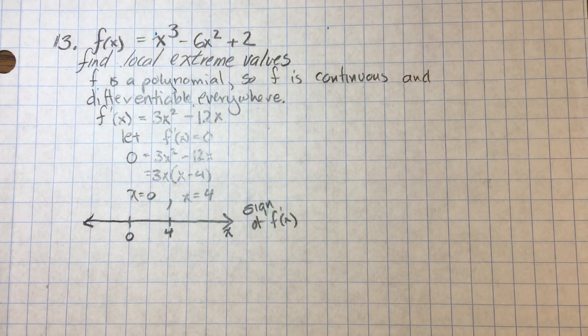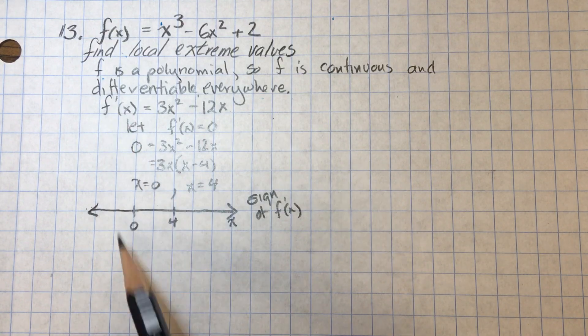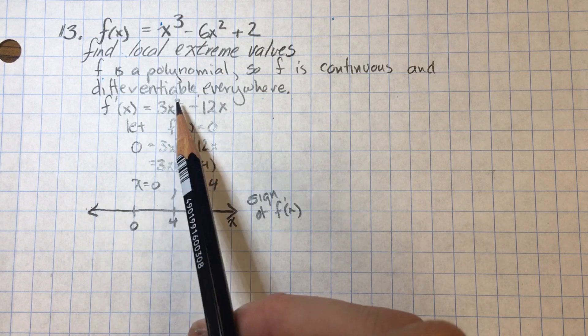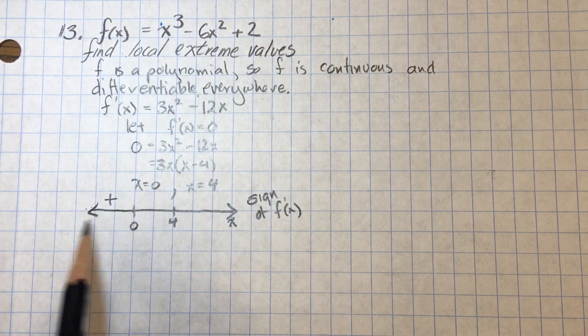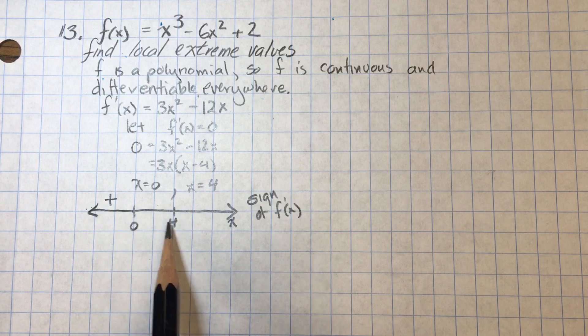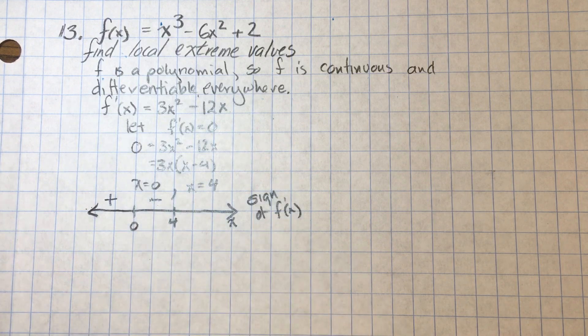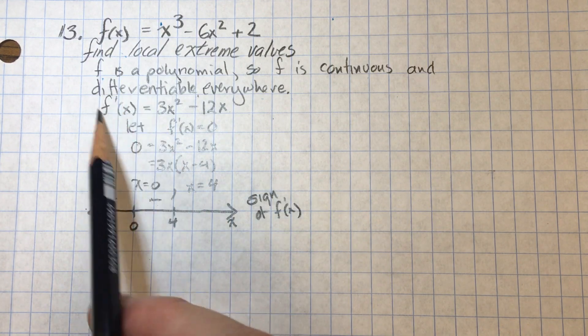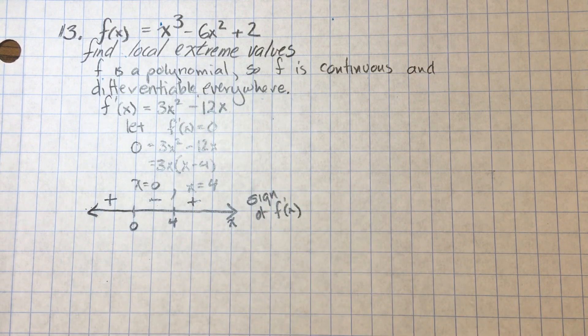So I just need to test intervals. Some number less than zero goes into F prime. I'm going to use negative a million because three times a million squared is way more positive than negative twelve times a million. So that means from negative infinity to zero, F prime is positive. If I choose a number in between zero and four like one, that would be three minus twelve is definitely negative. And a number greater than four, we can just use the end behavior of F prime like a million squared times three minus twelve times a million gives me a positive number.